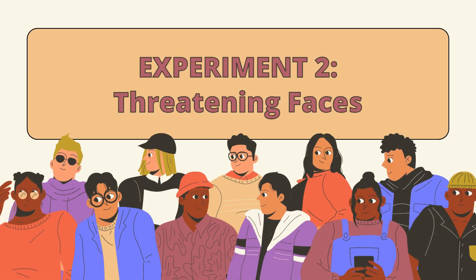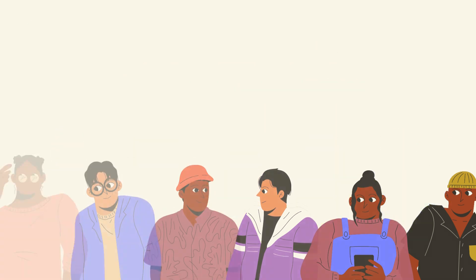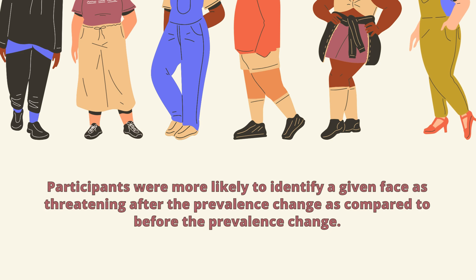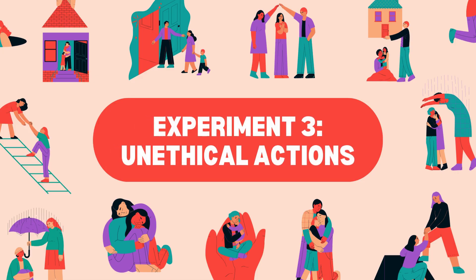In the second experiment, the researchers presented participants with a sequence of faces, each with a different level of threat, and instructed them to identify whether each face was threatening. For the first few faces, the researchers did not change the prevalence of threatening faces. However, for the last few faces, the researchers decreased the prevalence of threatening faces. The researchers reported that participants were more likely to identify a given face as threatening after the prevalence change as compared to before the prevalence change.